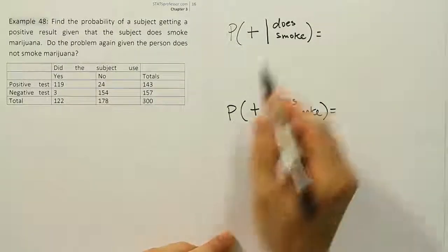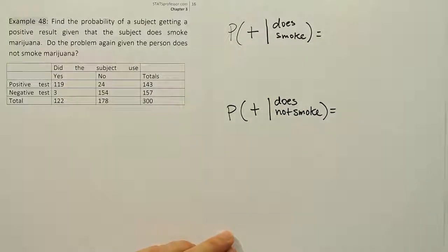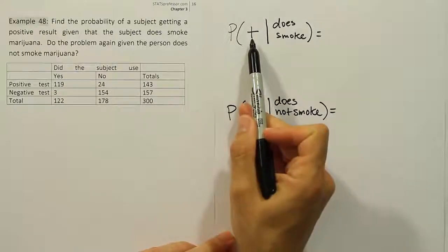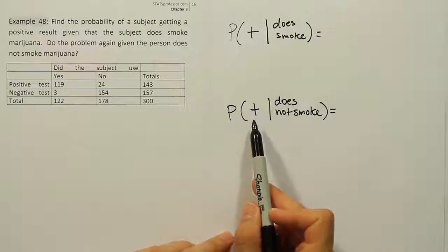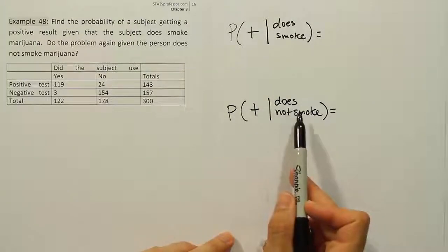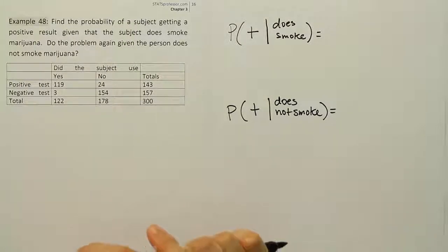And this should cover both scenarios for the positives. There are some positives where the test has made the right decision because the person does smoke, and there are some positives where the test has made the wrong decision because the person does not smoke. And our goal is to figure out the probabilities for both of these events.